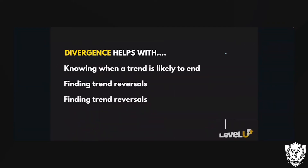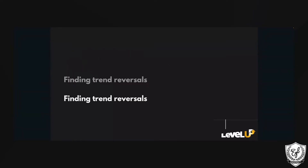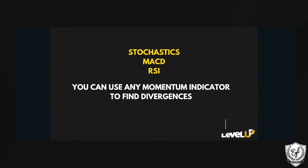What is divergence? Divergence helps us understand when a trend is likely to end. It helps us find trend reversals. It also allows us to understand whenever the price action is not agreeing with the oscillator or the indicator. You can use stochastics, which we talked about in the past, and you can use the MACD, which we've talked about in the past.